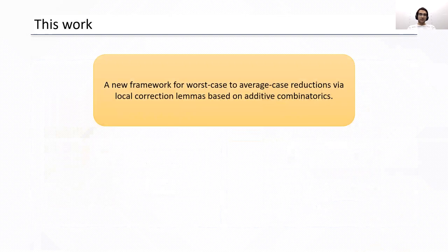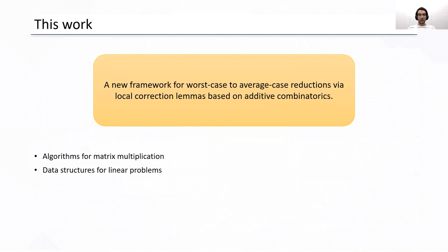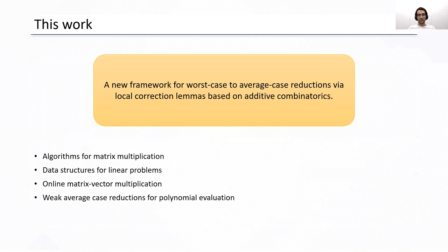The main result of this work is a new framework for worst case to average case reductions that is using some local correction lemmas based on additive combinatorics. We use this framework to derive some results for algorithms for matrix multiplication, data structures for linear problems, online matrix vector multiplication, and also weak average case reductions for polynomial evaluation. In this presentation, I'm going to cover the algorithms for matrix multiplication as an example of this framework.